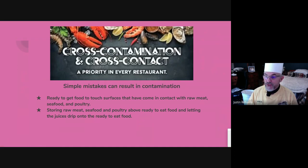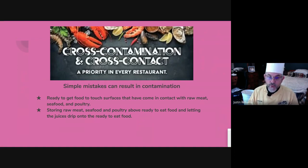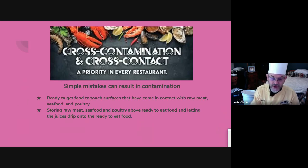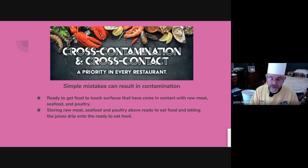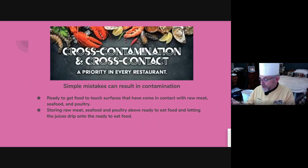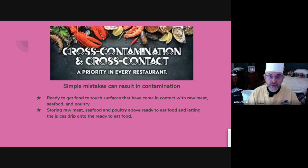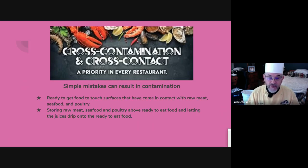Cross-contamination is simply if you are cutting on a cutting board with raw chicken, meat, fish, whatever — when you're done, you must remove the cutting board, clean, wash, and sanitize the area. Make sure that you clean, wash, and sanitize the knife and cutting board you're using before you start again. Make sure you wash your hands. The problem happens when somebody is handling raw meat or fish on the cutting board and then removes it without washing, rinsing, and sanitizing the cutting board, and then puts something ready-to-eat — like a salad, a cucumber, or something like that — on that same cutting board. That's cross-contamination.